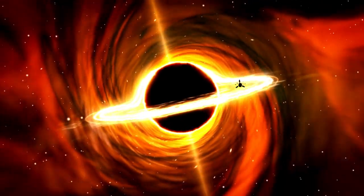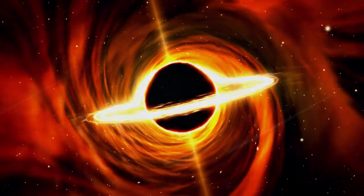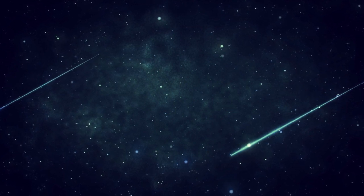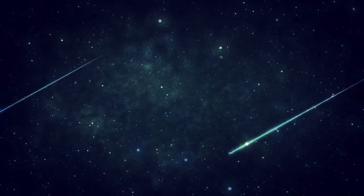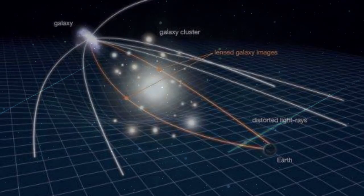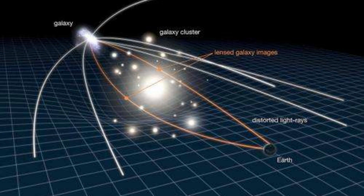In addition to the two main ways described, there are a few other examples of gravity producing light. For example, gravity can cause light to bend and distort as it passes through the gravitational field of a massive object — this is known as gravitational lensing. Gravity can also cause light to redshift, which means that the wavelength of the light is stretched out. This happens because light travels slower in a strong gravitational field.